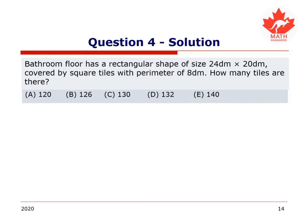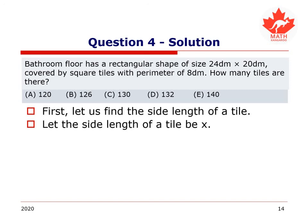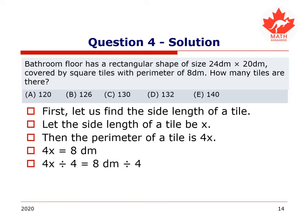Let's see what we have. First, let us find the side length of a tile. We know the perimeter is 8 and we know it is a square tile. Let's consider the side length of the tile and let's call it x. Then the perimeter is going to be x plus x plus x plus x, 4x, because it's a square tile. All sides are going to be equal. There's going to be 4. So 4x equals 8, which means x equals 2, 2 decimeters. It's quite a big tile.